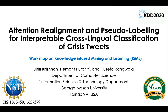Hello everyone. My name is Juthun. I'm a PhD student in machine learning at George Mason University, advised by Professors Hemant Purohit and Josef Aranwala. I'll be presenting our work on attention realignment and pseudo-labeling for interpretable cross-lingual classification of crisis tweets.